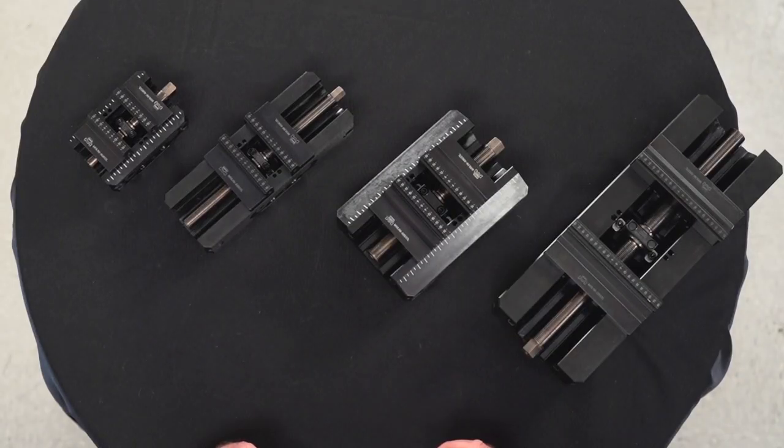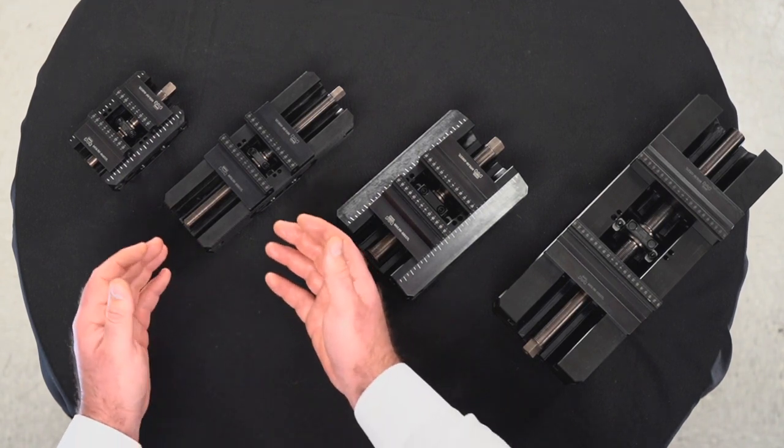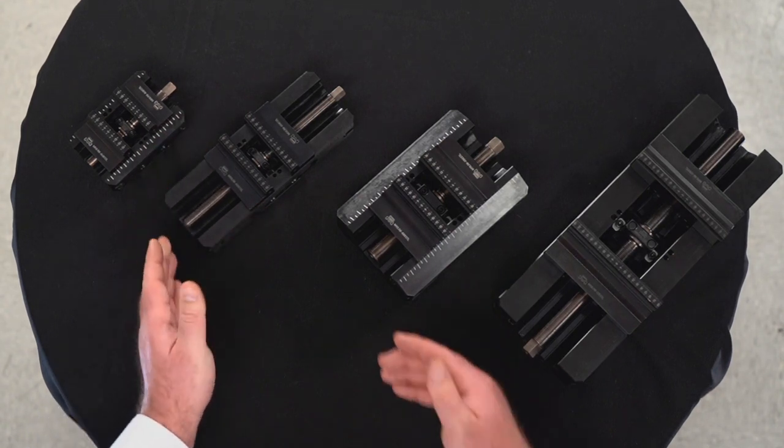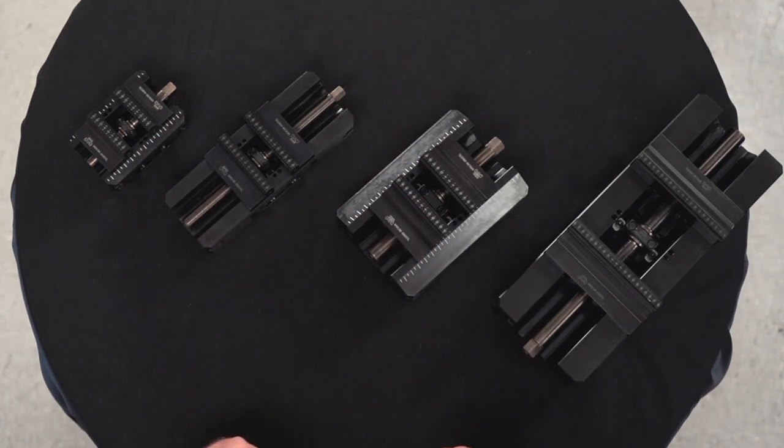To demonstrate the rest of the key features of the dyno grip vices, I will be utilizing our 52 series vise with our 80 millimeter wide jaw and our 200 millimeter max opening.